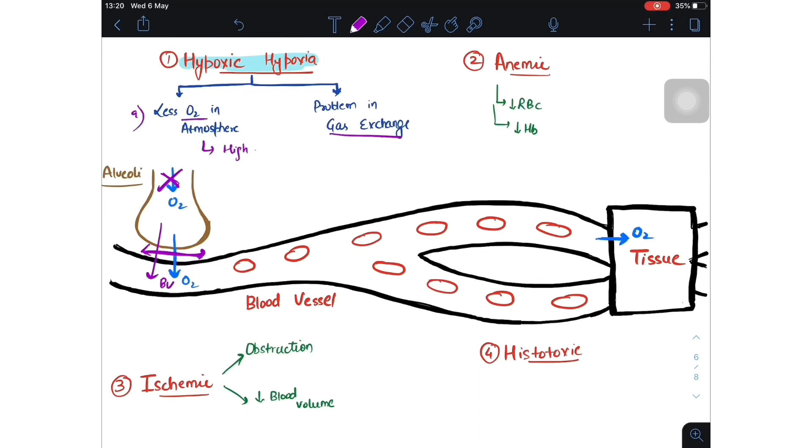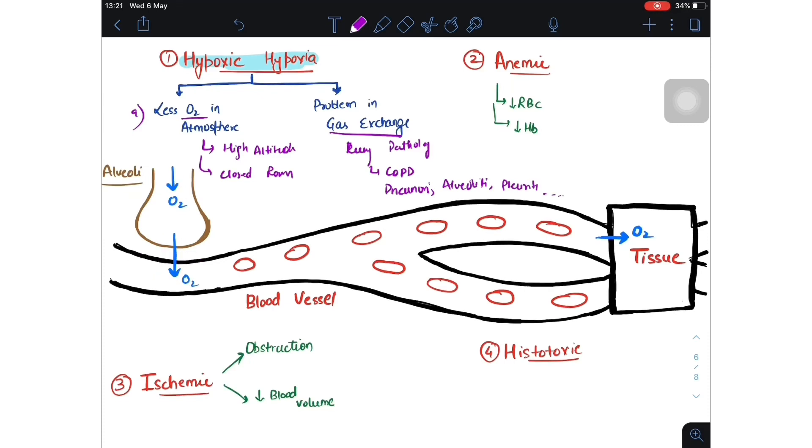First, if O2 is not in atmosphere, it can be if a person is at high altitude or in a closed room. Second, problem in gas exchange can be because of any lung pathology: it can be COPD, pneumonia, alveolitis, pleuritis, and many more.